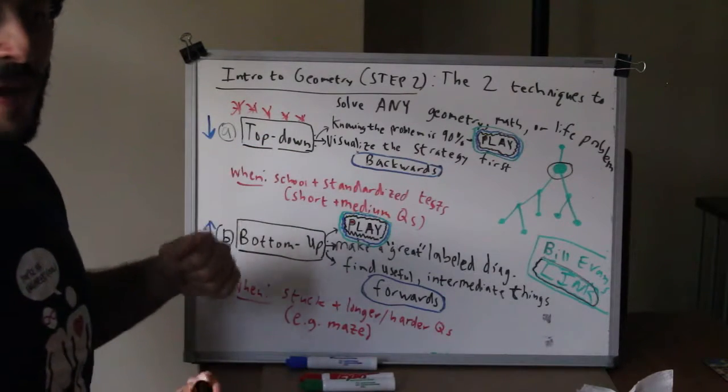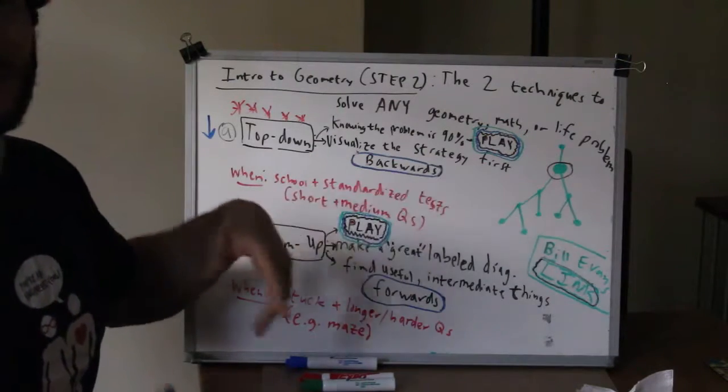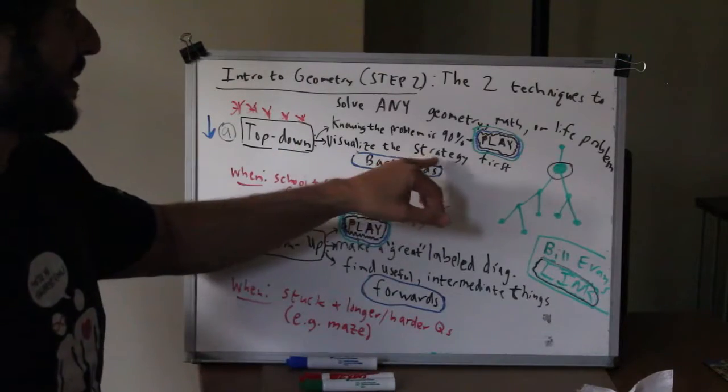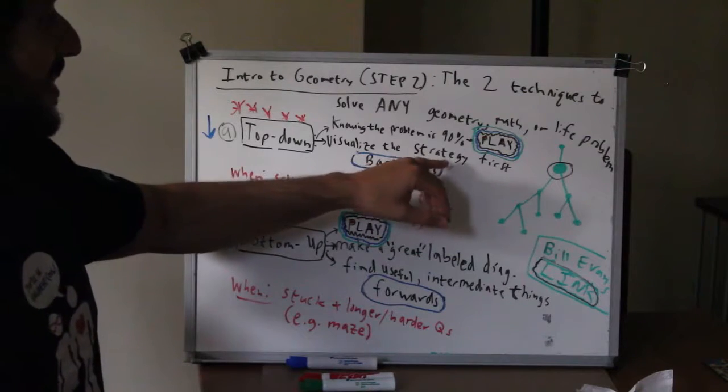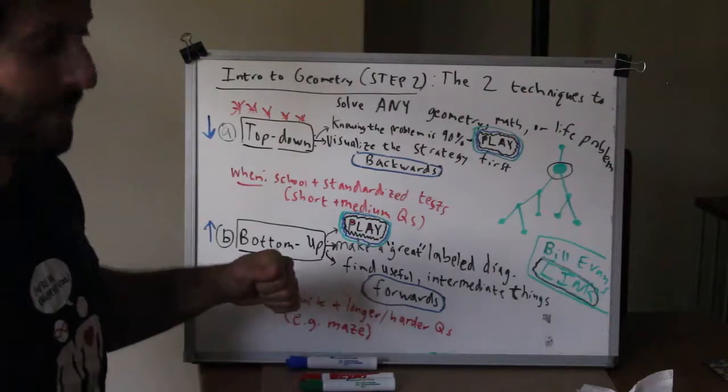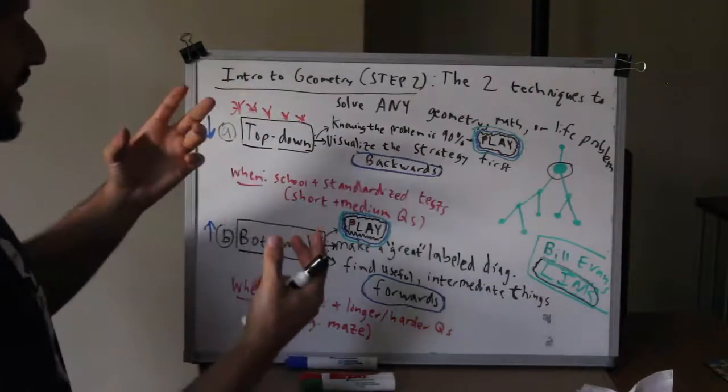So we're going to cover similar triangles, the Pythagorean theorem, all sorts of stuff. Let's say you're not good at the Pythagorean theorem or you don't even know the Pythagorean theorem, then you're going to have a tough time visualizing a strategy that involves the Pythagorean theorem. So you might have an intuition, but like I said your skills have to be in place.